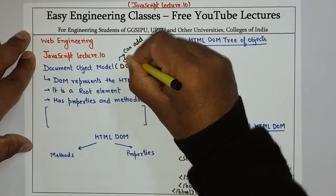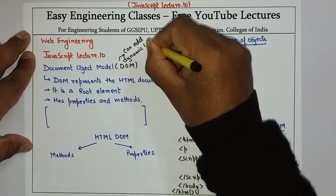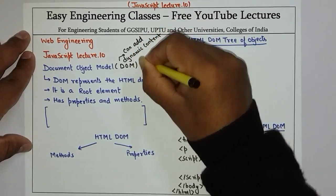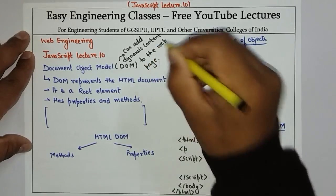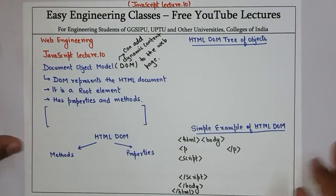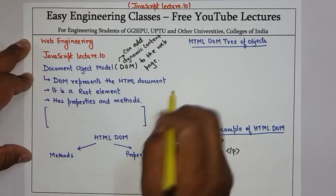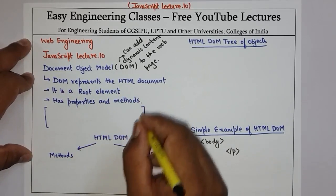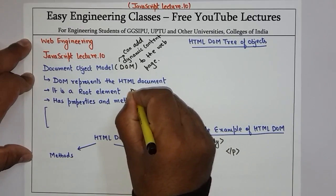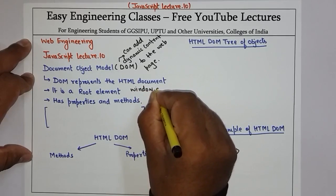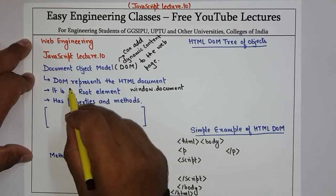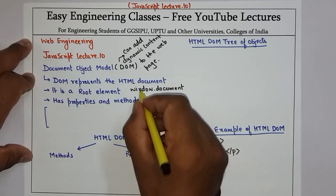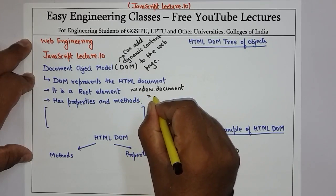DOM को use करके आप अपने web page पे एक static web page के ऊपर dynamic content को add कर सकते हैं। DOM करता क्या है — DOM represents the HTML document। और अगर हम कहते हैं window.document, तो DOM पूरे HTML document को represent कर रहा है, so it is nothing but the same as simple document.